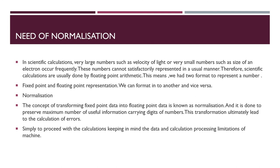Starting from the beginning: in maths, normalization is needed in scientific calculation. Very large numbers such as the velocity of light, or very small numbers such as the size of an electron, occur frequently. These numbers cannot be represented in the usual manner. Therefore, scientific calculations are usually done using floating point arithmetic. This means we have two formats to represent a number: fixed point and floating point, and we can convert from one format to another.